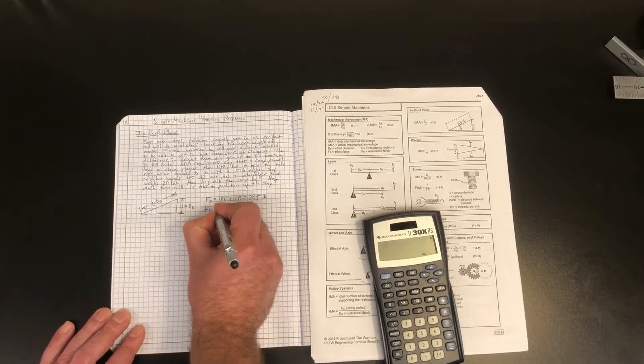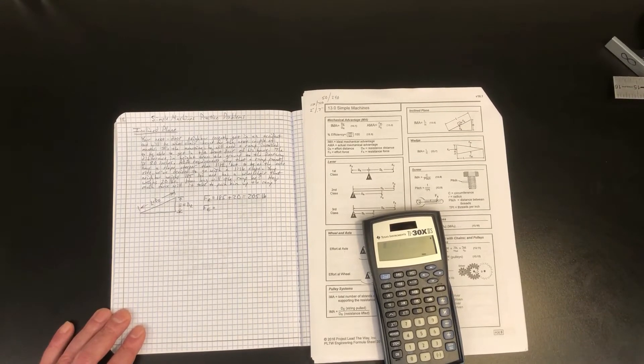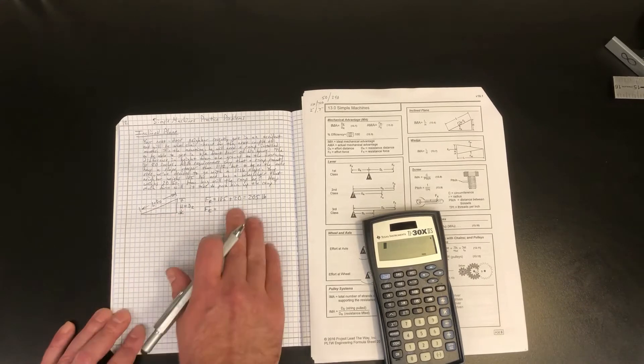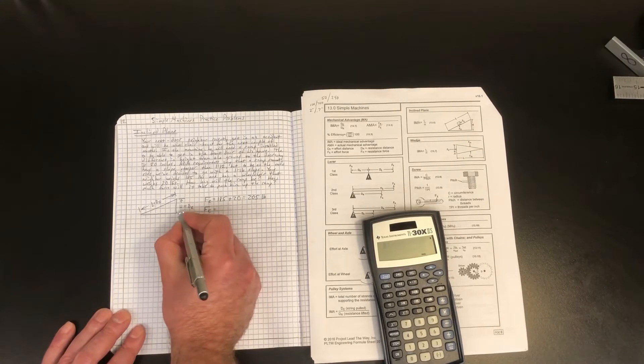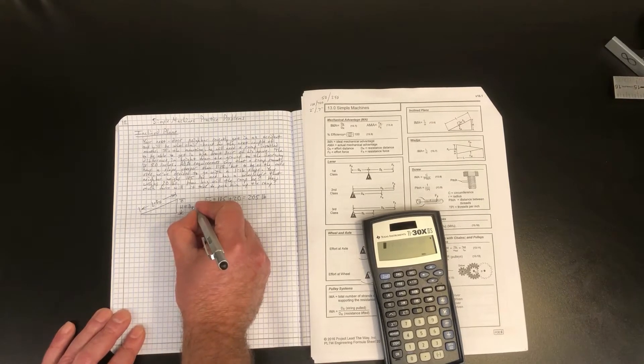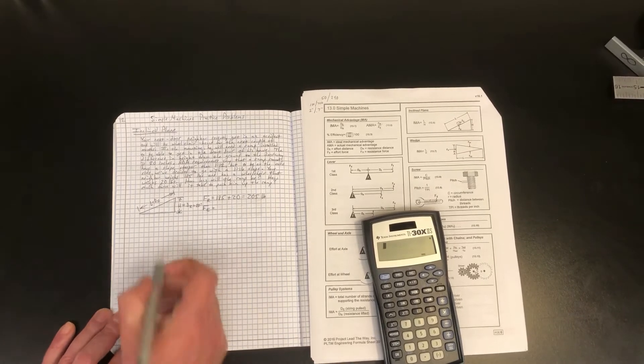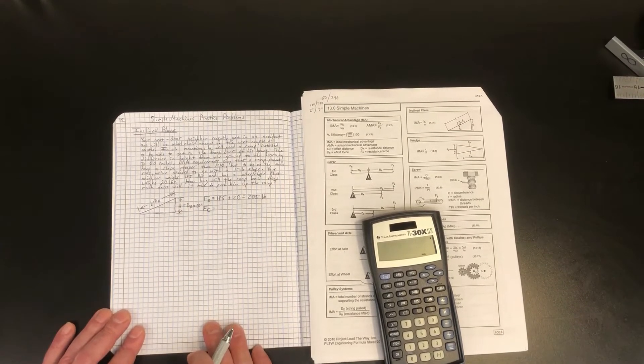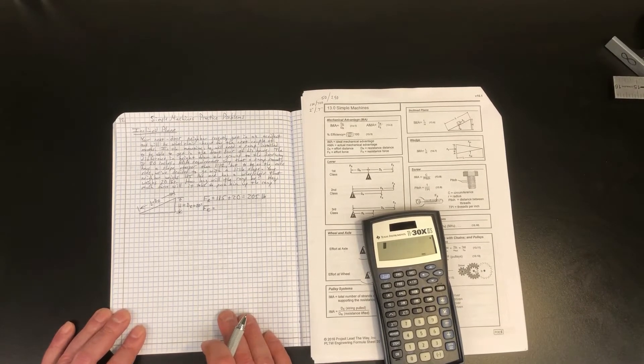Our effort force, we're going to have to figure out what that is. So now that we have our diagram drawn and our known variables here, we have one more known. We know that the H, or resistance distance, is equal to 20 inches. We don't know what this is yet. We know that the slope is going to be 1 to 16. So slope is defined as rise over run.